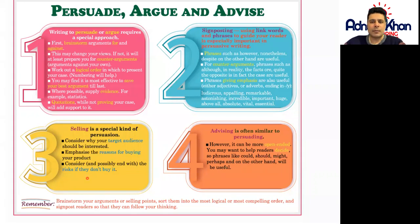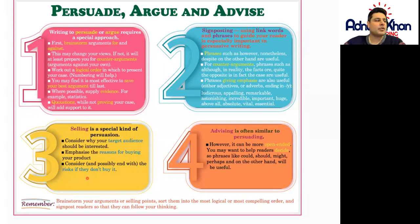Let's move on to point number three. Selling is a special kind of persuasion. Consider why your target audience should be interested, emphasize the reasons for buying your product, and consider ending with the risks if they don't buy it. When you're selling a product as a salesperson, persuasion is very important — you're looking at a certain target audience, the reasons for buying the product, and the risks if they were not to buy it.